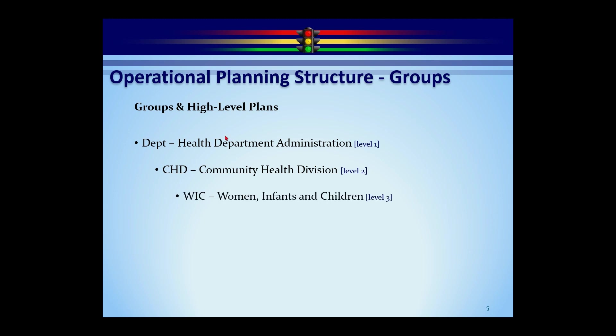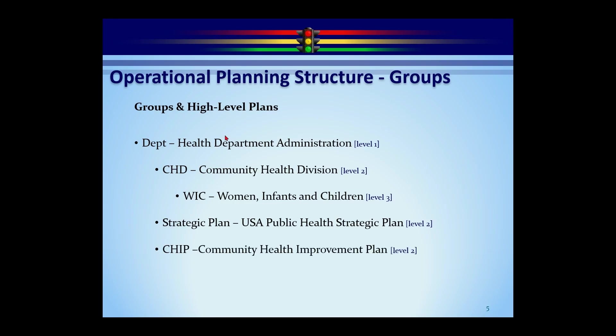Under the department, you might have a Community Health Division as a level-two group, then WIC reporting up to Community Health as level three. You could also move WIC up to level two. Your strategic plan would typically sit at the department level since it encompasses the whole department. The community health improvement plan would also typically be at the department level.